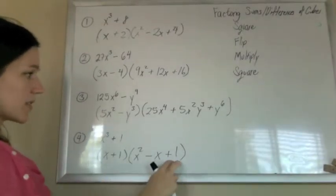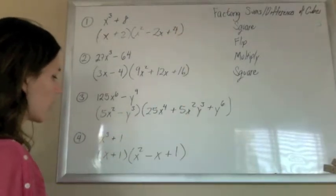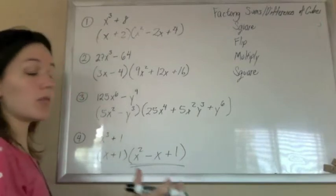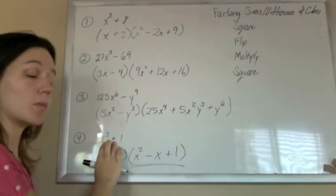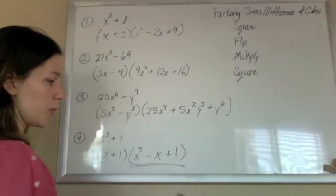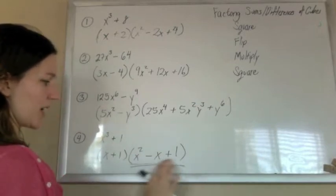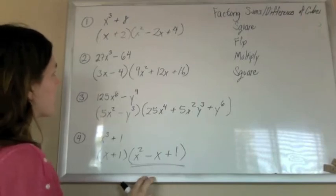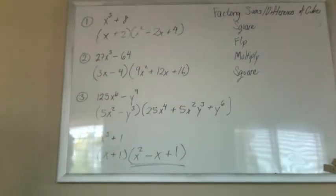Notice, again, the last guy is always positive because we're squaring it. You might wonder, can you factor this part here more? And as long as this part here was factored as far as it could be to begin with, this part will never factor more. You can prove that later, but you can take my word for it now. If you tried to factor that, it just would not work. That's that. Thank you.